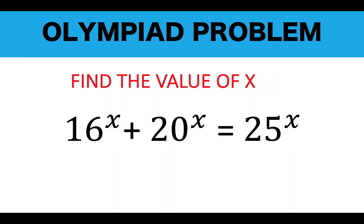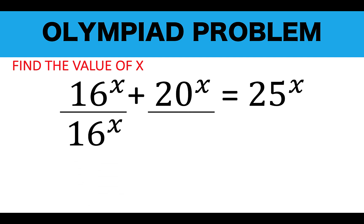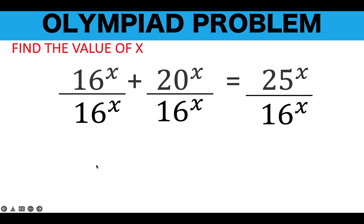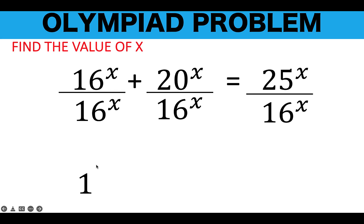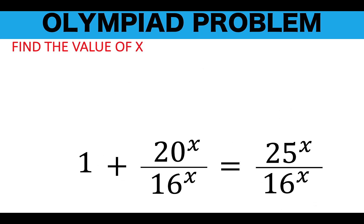Now, let's solve this problem together. The first thing that we're going to do is divide the first term by itself, and divide the rest of the terms by the same value, 16 raised to x. Any number divided by itself is 1, so the first term is 1, and we just copy all the rest. Then let's simplify this further.